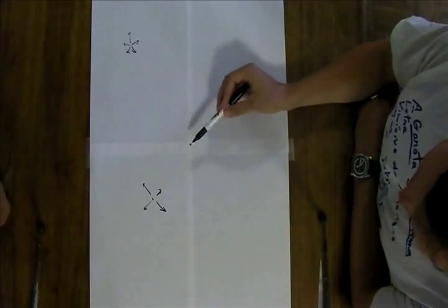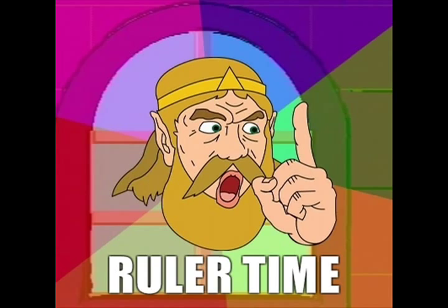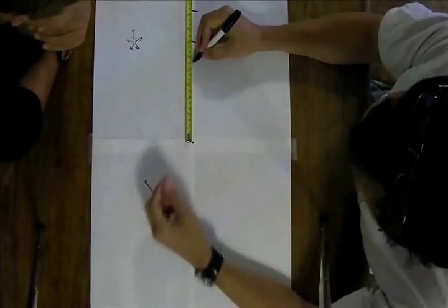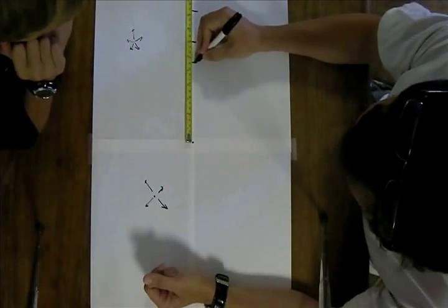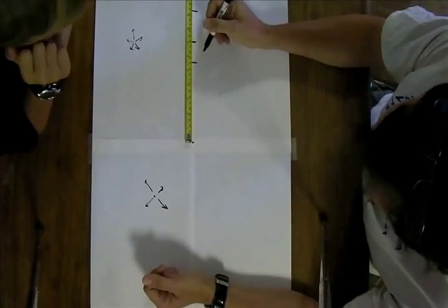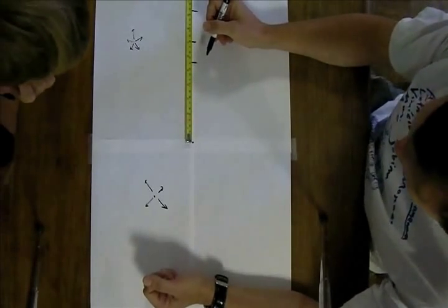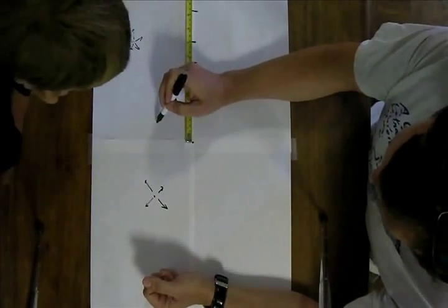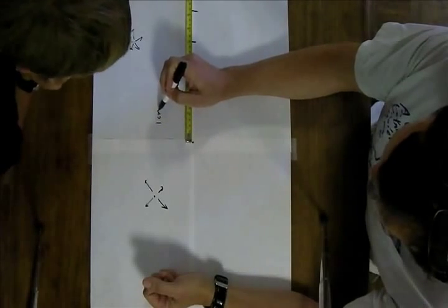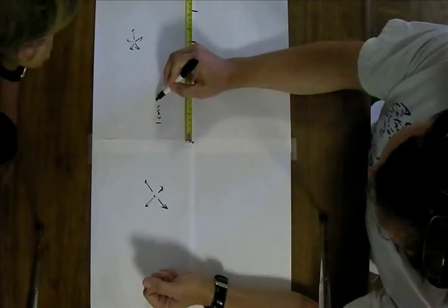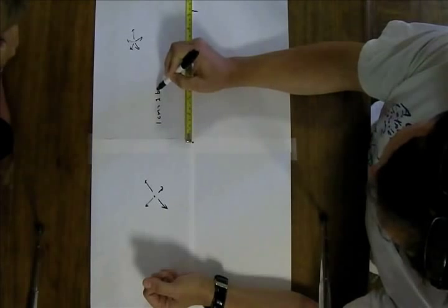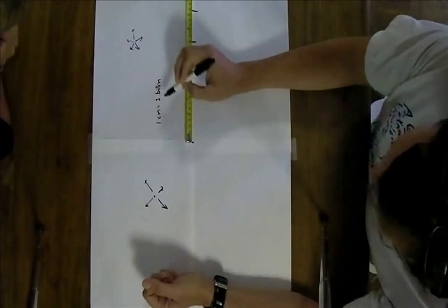Should I grab a ruler? We'll make this 14 billion light years. Okay. So it's a centimeter to a billion light years. Yeah. That's a huge scale difference. One centimeter equals one billion light years.